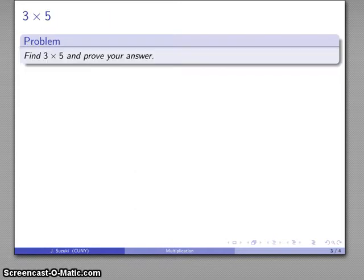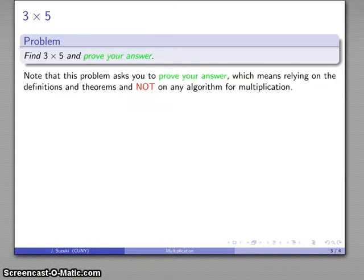So let's take a simple example here, 3 times 5, and we want to find 3 times 5 and prove that our answer is correct. And again, notice that we're not actually just trying to find 3 times 5. We all know what that product is going to be. But the real question at the heart of this problem is, why is it what we think it is, and how can we show that?